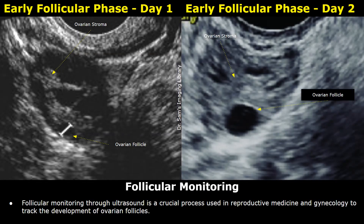Hello everyone, this is Dr. Sam, and this video is about follicular monitoring on ultrasound. Follicular monitoring is a series of ultrasound scans that track the growth and development of ovarian follicles during the menstrual cycle. These follicles contain eggs, and the goal is to identify the dominant follicle which will release an egg during ovulation. The process is vital for women trying to conceive, whether naturally or through fertility treatments such as ovulation induction, intrauterine insemination, or in vitro fertilization.